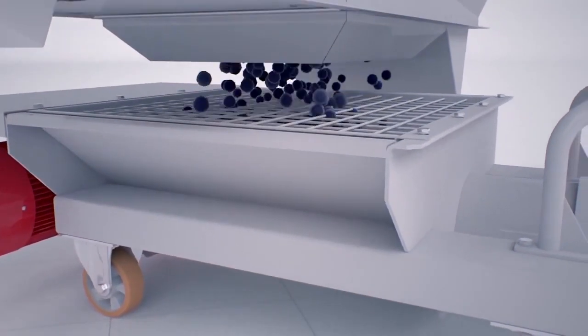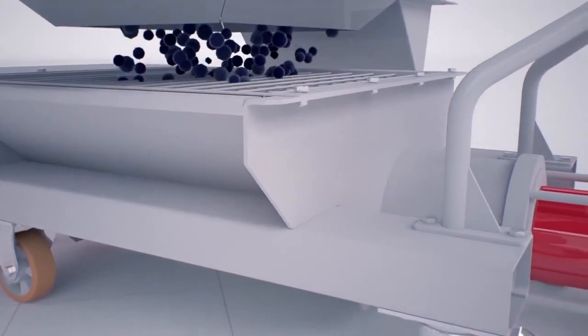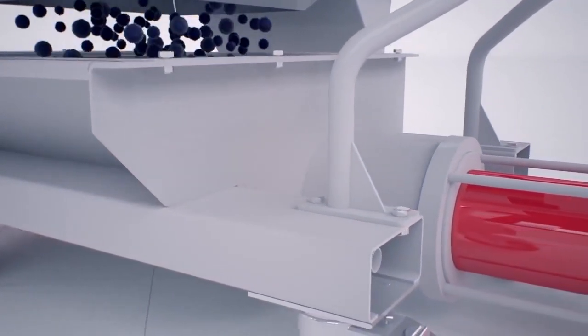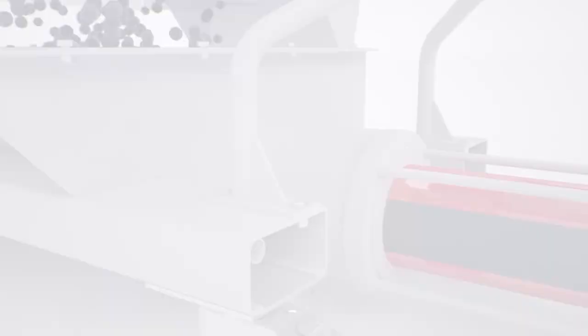The result of this is a semi-liquid mass of seeds, skins, pulp and juice that must be pumped to the tanks, where the alcoholic fermentation will happen.